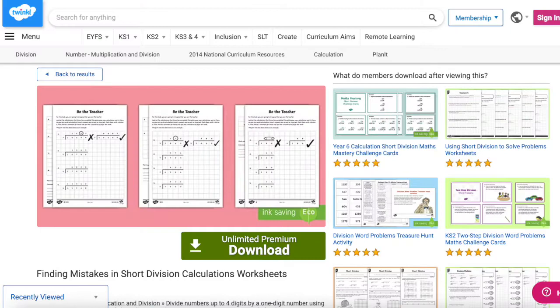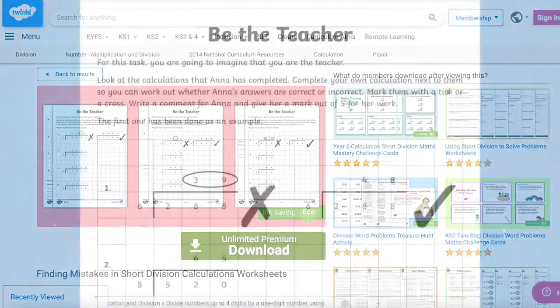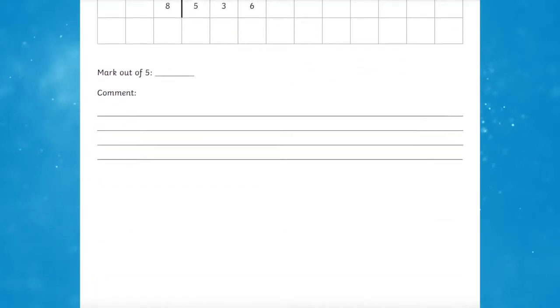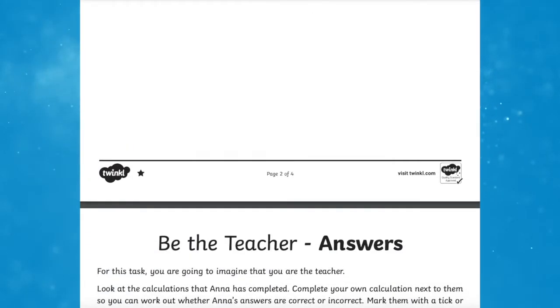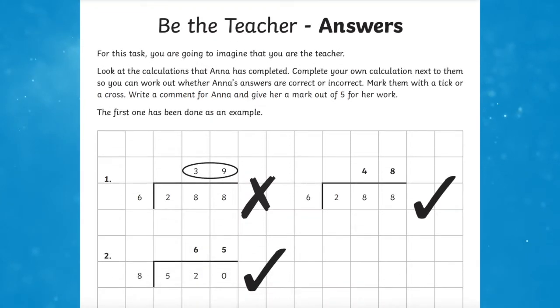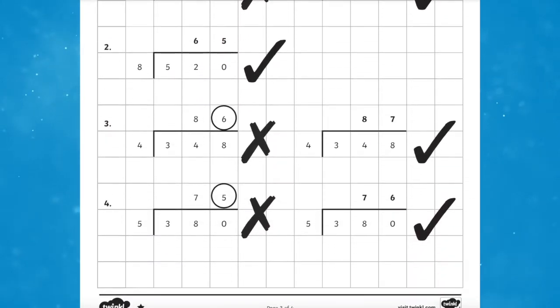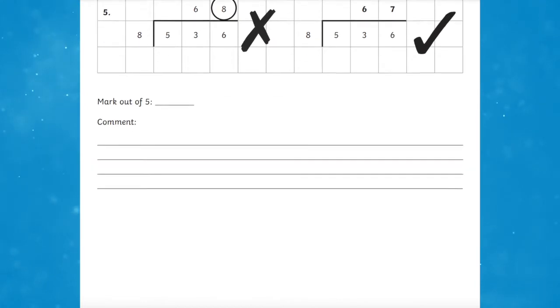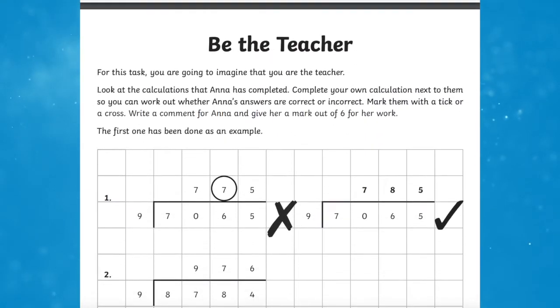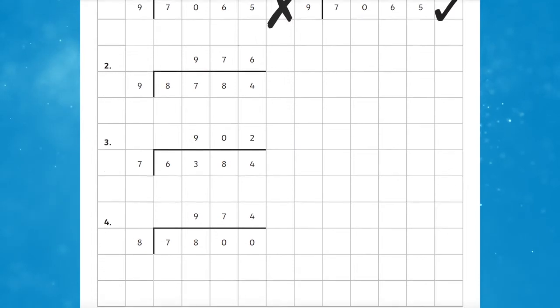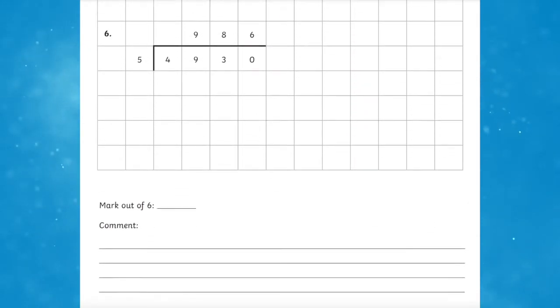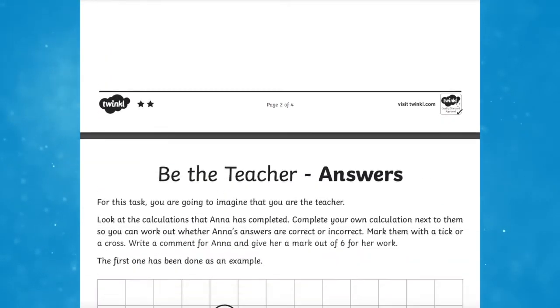The Finding Mistakes in Short Division Calculations Worksheet is a great resource to help children understand where some people go wrong with their short division. Use these differentiated worksheets so children can practice their own short division skills by checking for mistakes in others. This resource helps children to have a deeper understanding of short division as it encourages pupils to identify the common errors that have been made and this can be used to prompt discussion as they address the misconceptions.